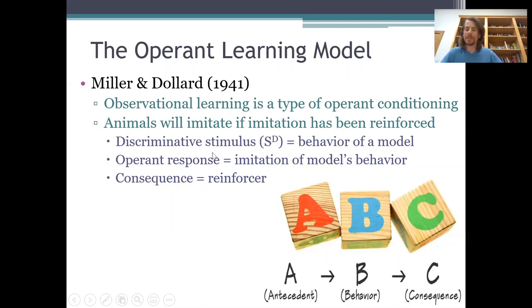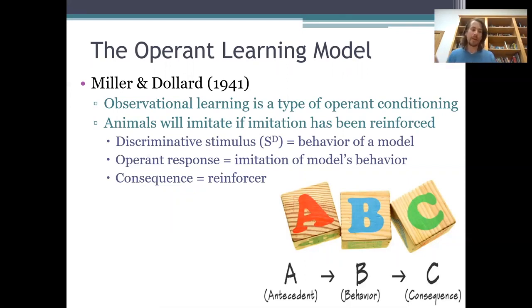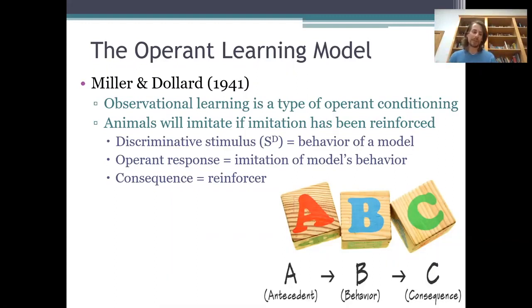There's a discriminative stimulus, there's an operant response, and there's a consequence. Seeing a model behave in a certain way is the discriminative stimulus — that's the antecedent. You behaving in the same or a similar way is the operant response, and that response will get strengthened if it's followed by a reinforcer and weakened if it's followed by a punisher. That's essentially how the operant learning model explains observational learning.